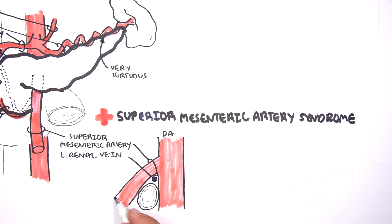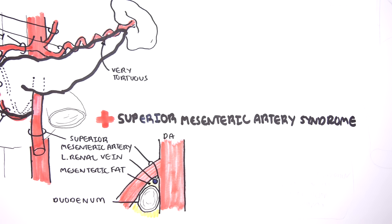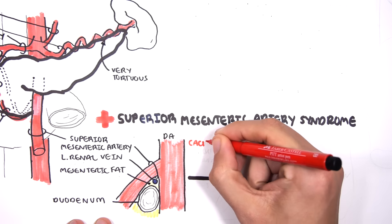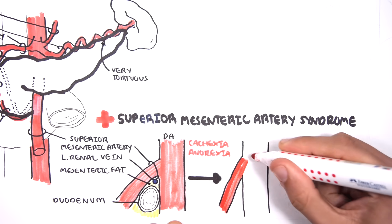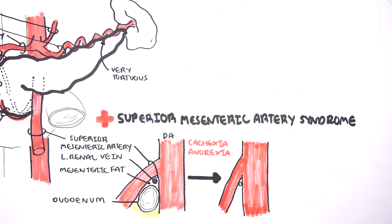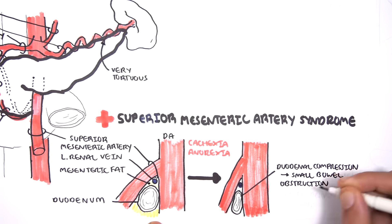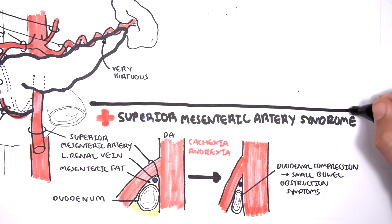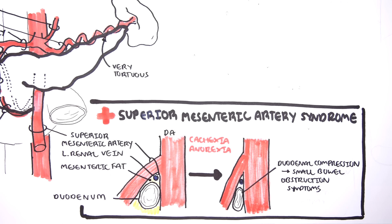Below the superior mesenteric artery is the duodenum, and surrounding all these structures is mesenteric fat, which maintains their position and protects them. In cases of malnutrition or cachexia — such as in anorexia or malabsorption — loss of this mesenteric fat causes duodenal compression, resulting in symptoms of bowel obstruction. The acute angle can also compress the left renal vein, potentially causing kidney injury and left-sided varicocele.